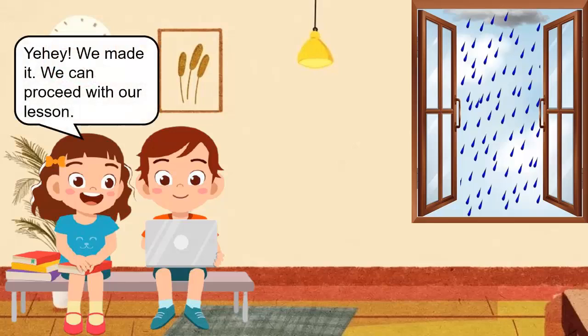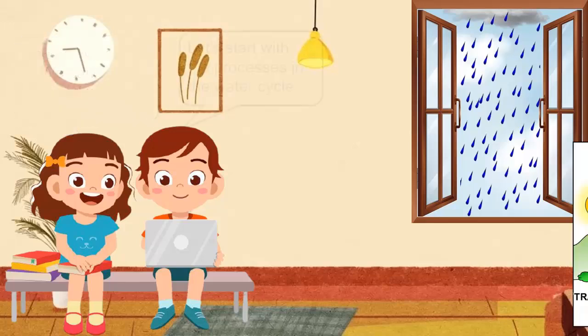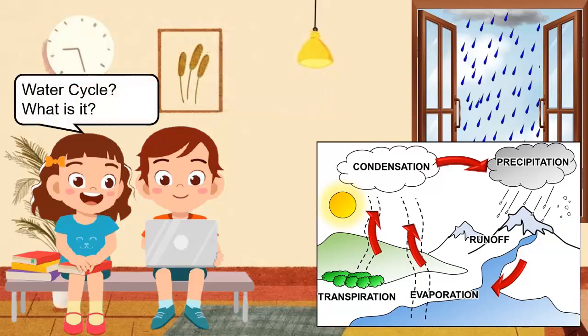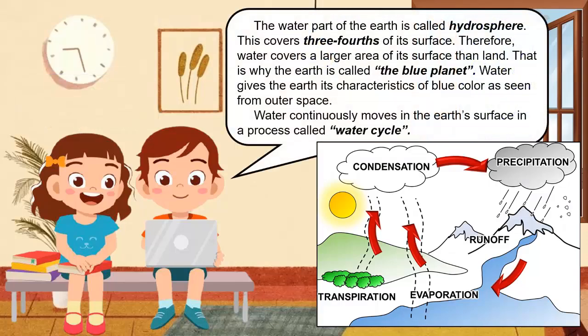We can proceed with our lesson. Let's start with the processes in the water cycle. The water part of the earth is called the hydrosphere. This covers three-fourths of its surface. Therefore, water covers a larger area of its surface than land — that is why the earth is called the blue planet. Water gives the earth its characteristic blue color as seen from outer space. Water continuously moves on the earth's surface in a process called the water cycle.